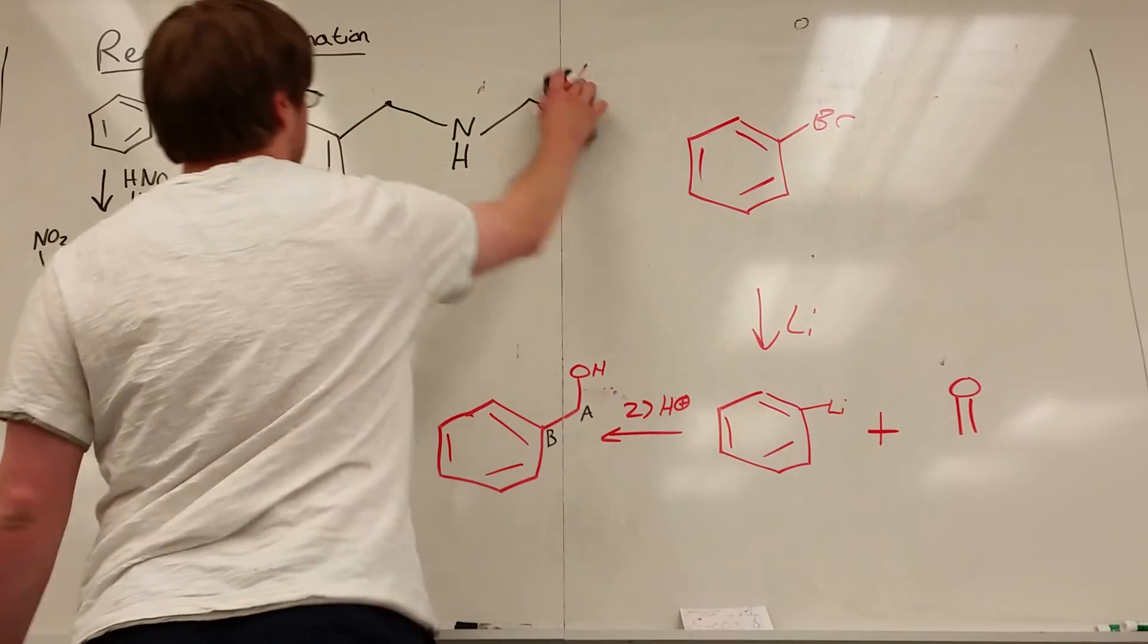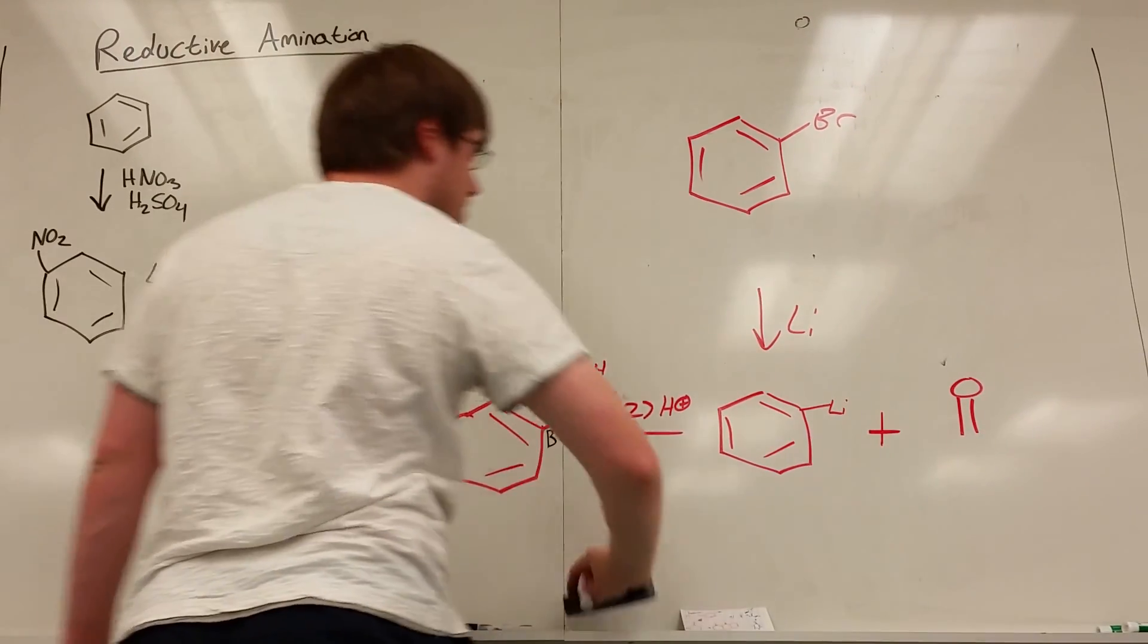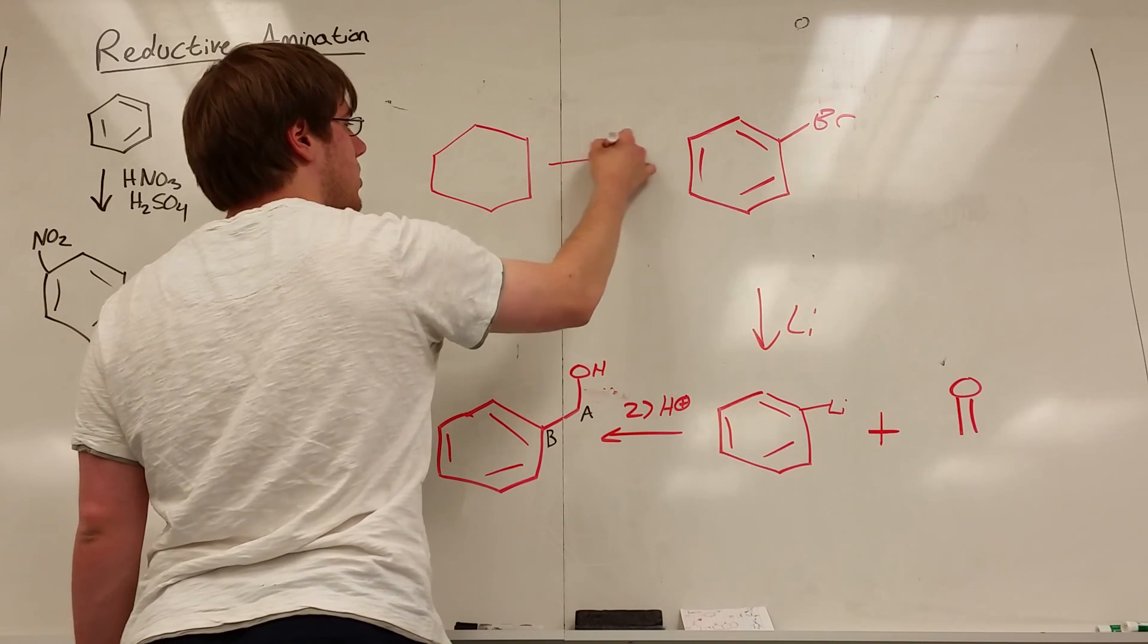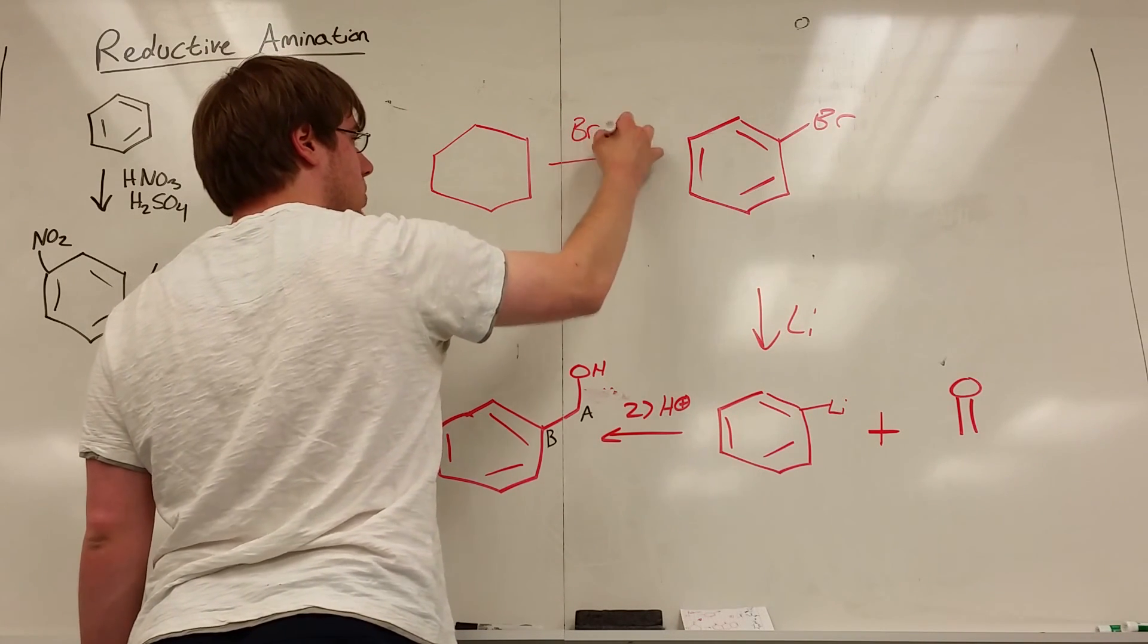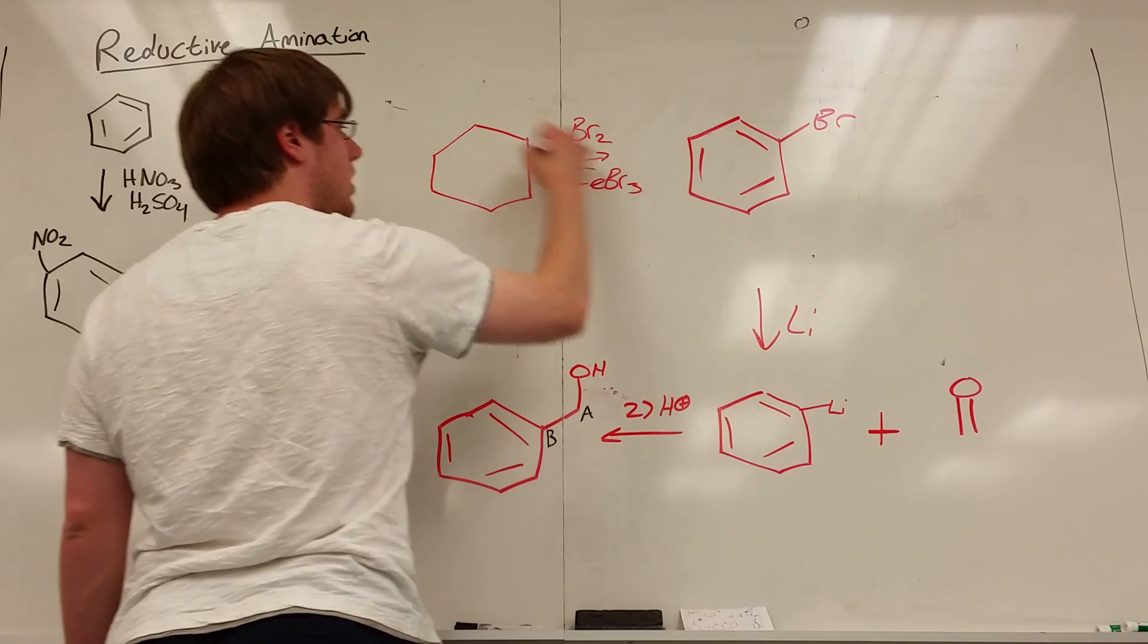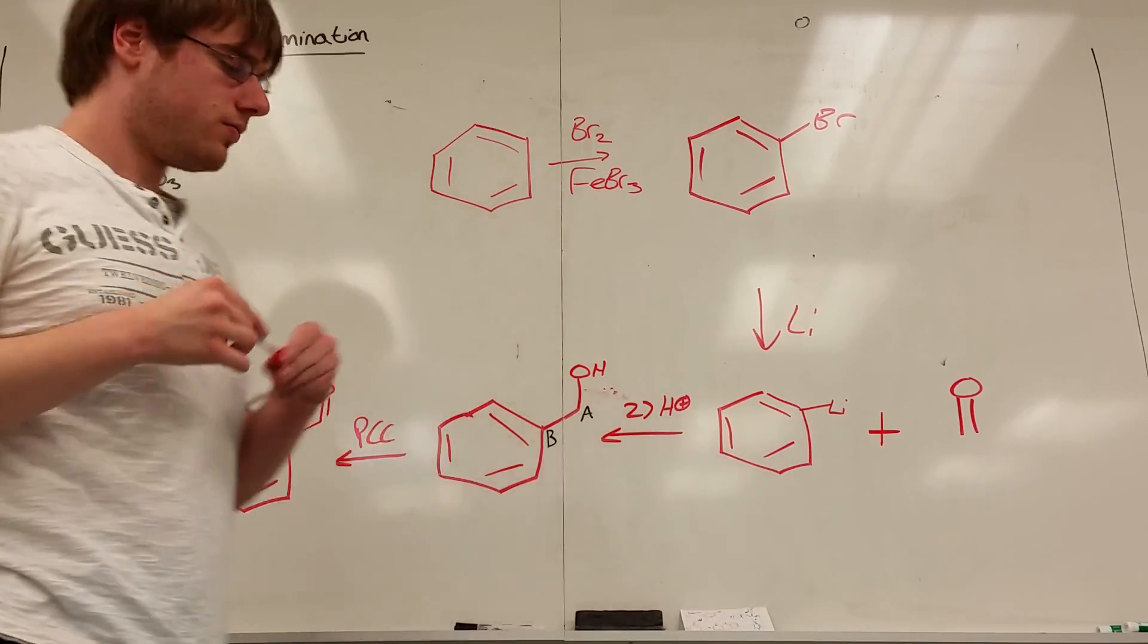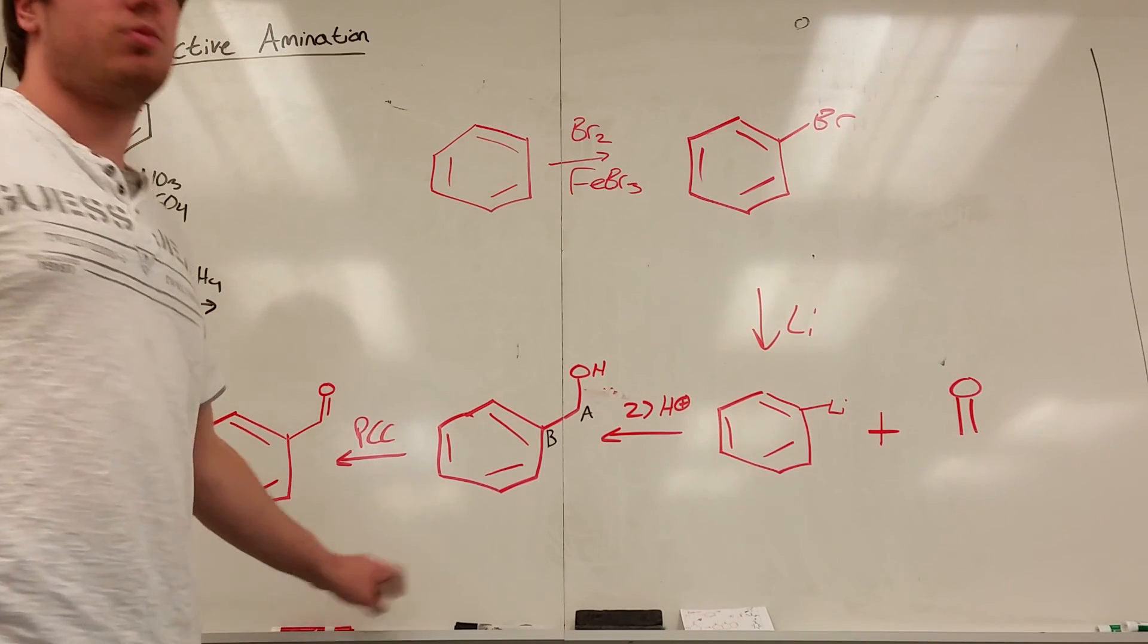So now I have bromine on a benzene, and we know how to get that on. We know how to get bromine on benzene very easily. You take your benzene, and you react it with Br2 with FeBr3. And now you've synthesized that other part, and so that's how you would synthesize number three.